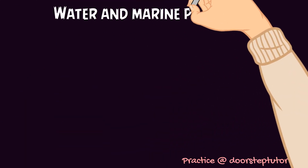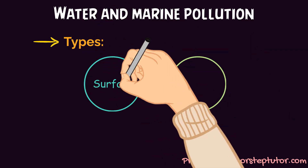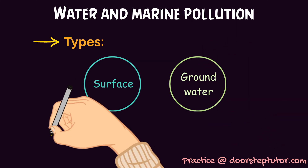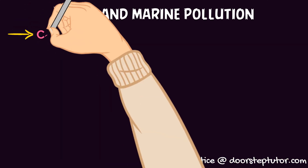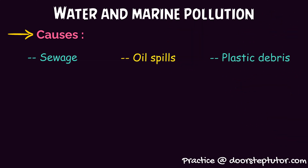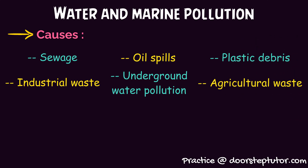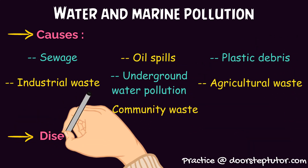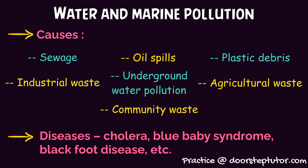Moving ahead to water and marine pollution. There are two types of water pollution: surface water pollution and groundwater pollution. Marine pollution is also a threat to lots of marine life. Causes include sewage, oil spills, plastic debris, industrial waste, underground water pollution, agricultural waste in the forms of pesticides, and community waste. Diseases caused by polluted water include cholera, blue baby syndrome, and black foot disease.